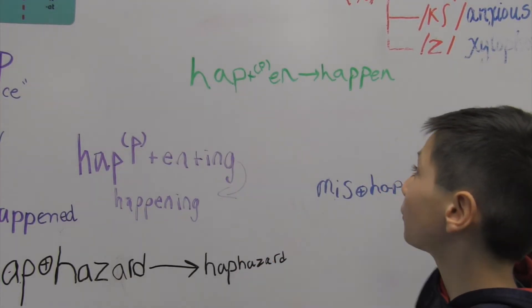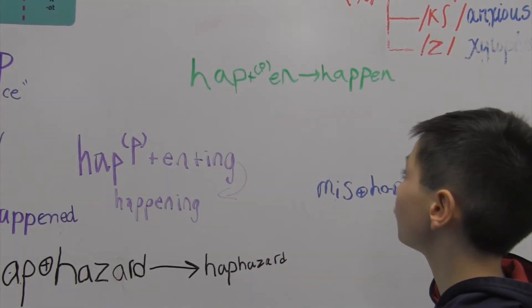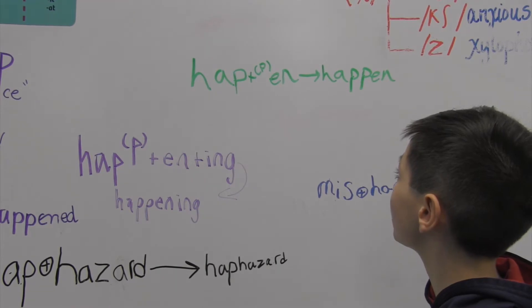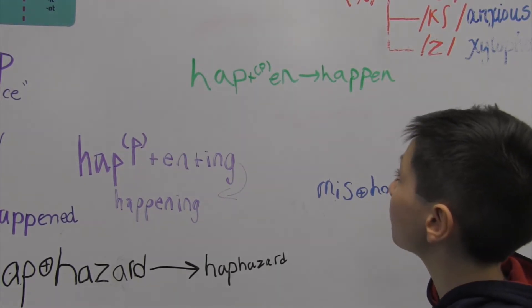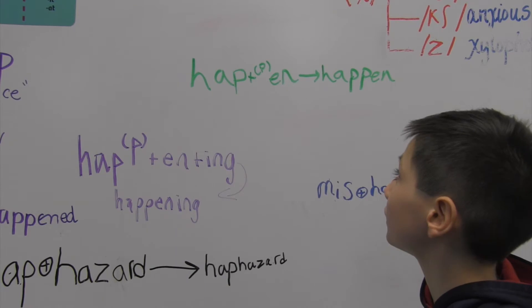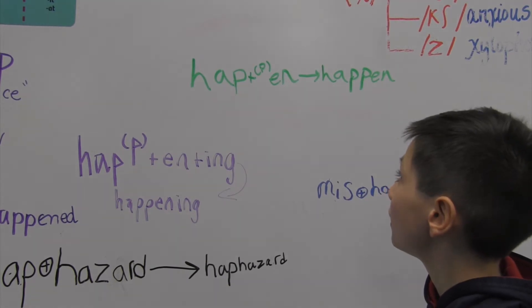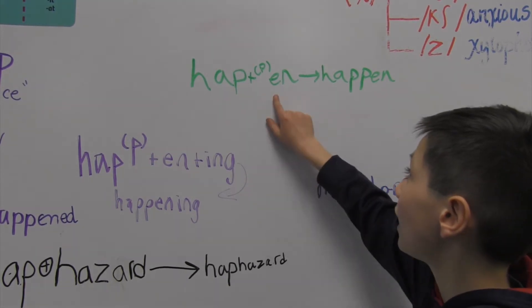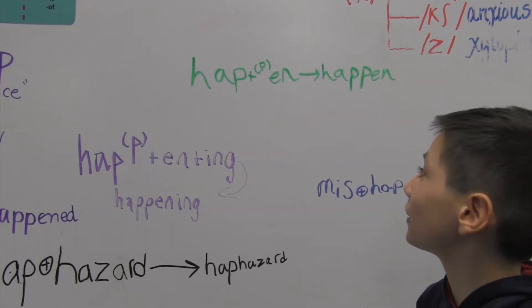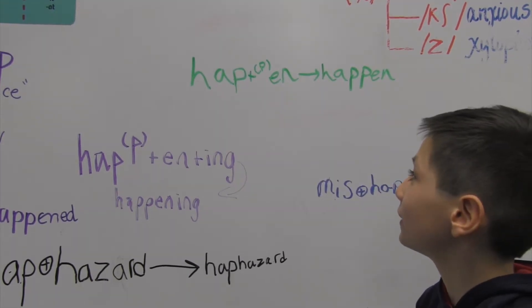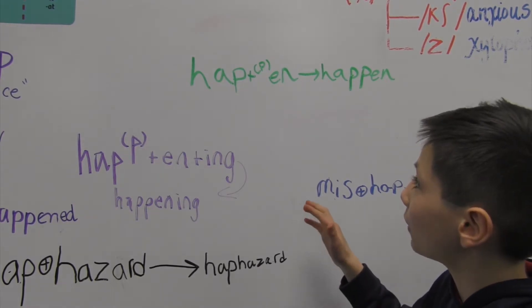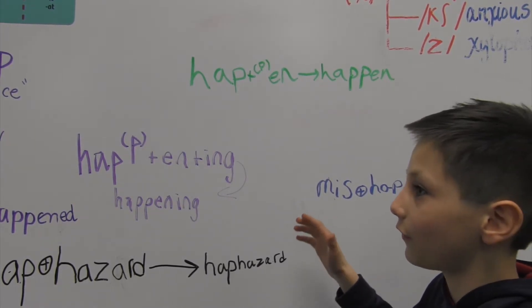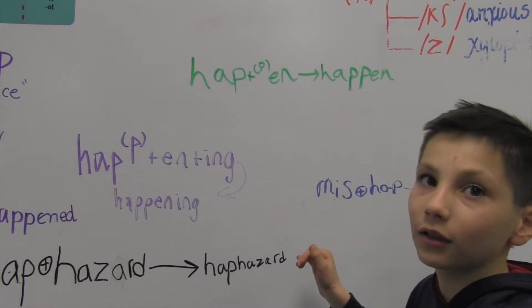H-A-P plus E-N is rewritten as H-A-P double the P-E-N. We double the P because the suffix has a vowel in front. It's a one syllable base and it has one consonant and it has a vowel in front of it.